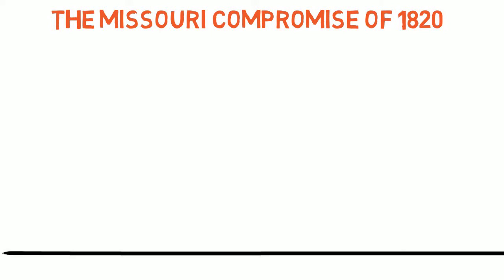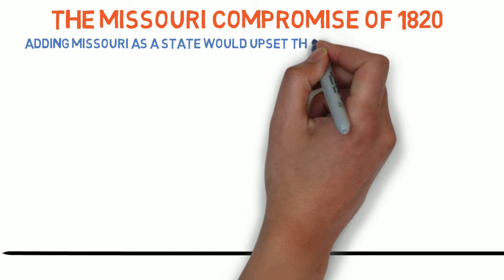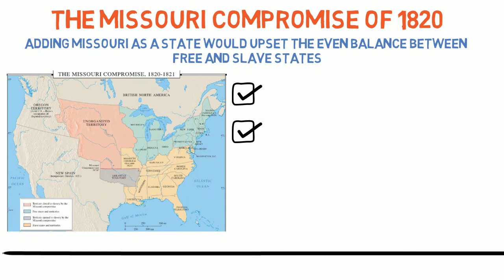We begin with the Missouri Compromise of 1820. When the Missouri Territory applied for statehood, the proposed state constitution allowed slavery. At that time, there was an even balance of slave states and free states. Adding Missouri as a state would upset that balance, which was important because each state is allowed representation in the Federal Congress.